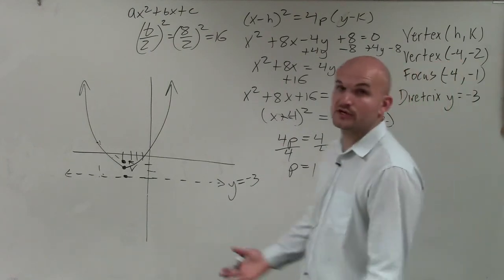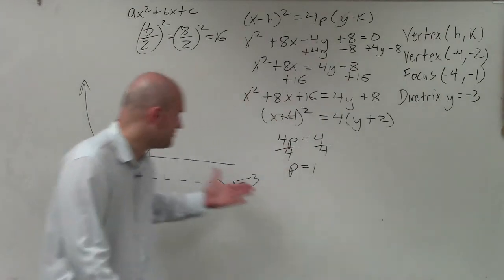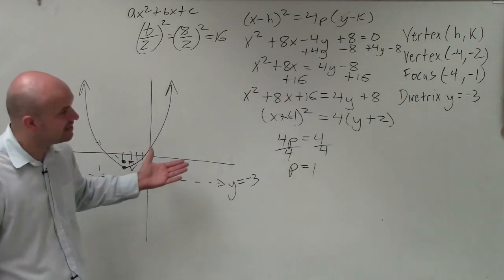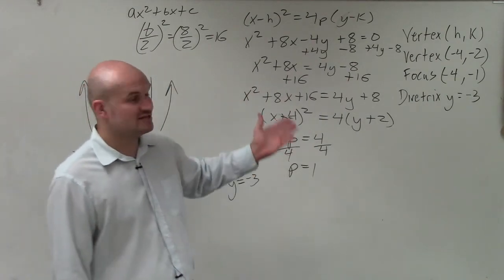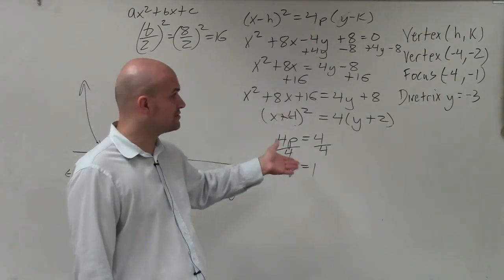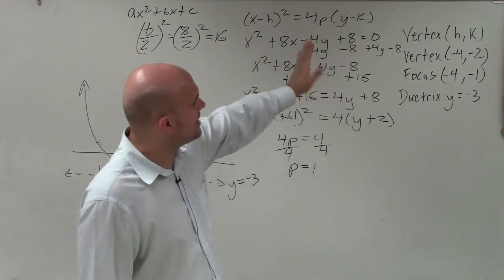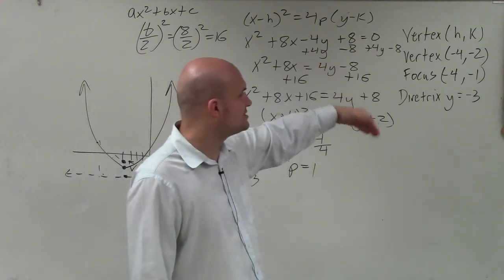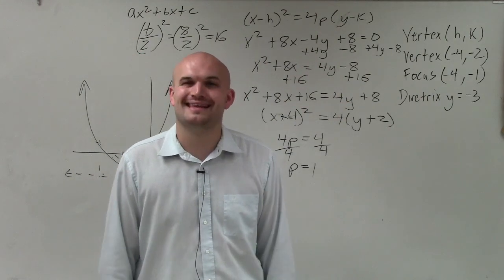And there you go. That is how you graph a parabola by converting it to vertex form by completing the square, as well as identify and label the focus, the directrix, and the vertex. Thanks.